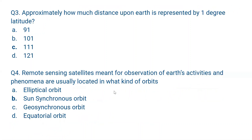Question number 3. Approximately how much distance on the earth is represented by one degree of latitude? The correct answer is C, 111 km.